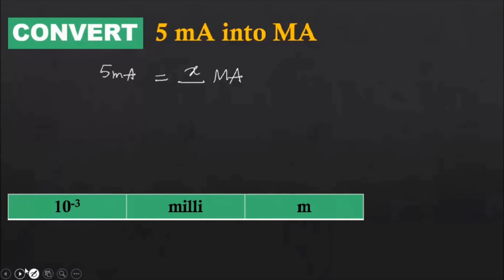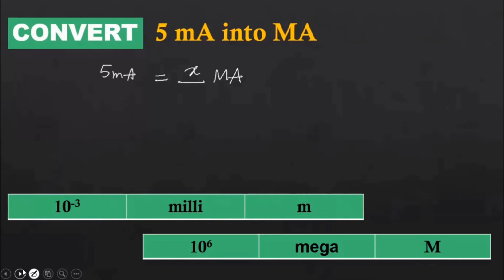The next question is convert 5 milliampere into megaampere. Small m stands for milli, capital M stands for mega, capital A is amperes. We have already discussed about it in fundamental quantities. Now let's write it: 5 milliampere is equal to, so let our answer be x, x megaamperes. Okay, so before going further, let's find out what is the power for milli. If you remember, very good. Else I have written here: 10 power minus 3 is milli, m. And 10 power 6 is mega, capital M. The more and more questions you do, you will be able to memorize them.